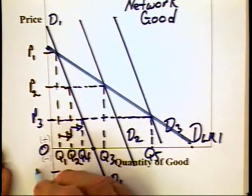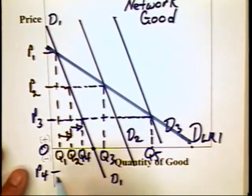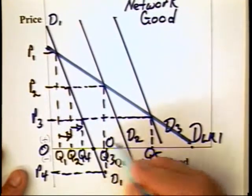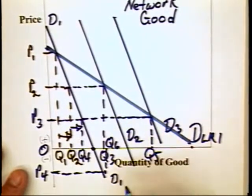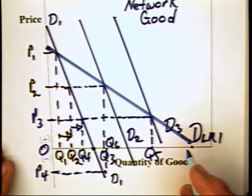For that matter, it's quite logical that a producer today would charge a price like P4 because, by charging price P4, they would sell, say, Q6. And that can stimulate an even greater demand out here in the future.